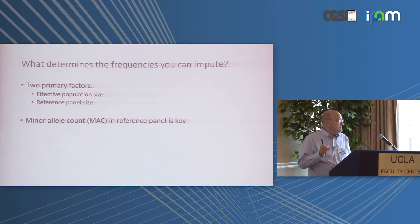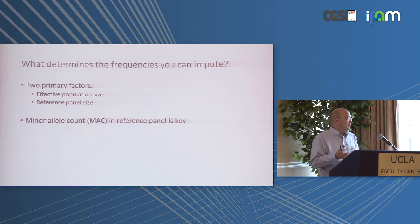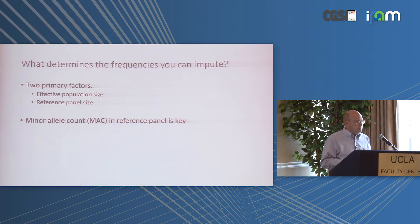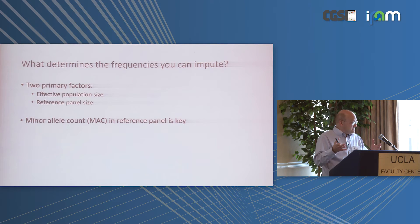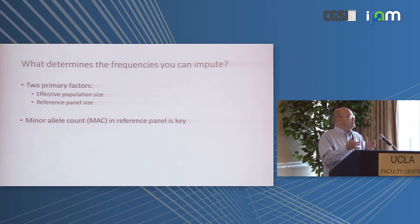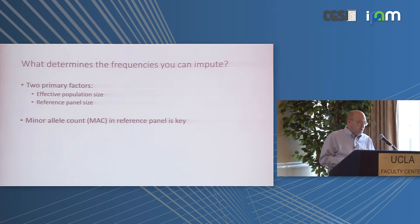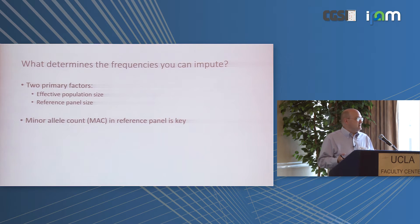The general rule is you can impute high-frequency markers well and low-frequency markers not very well. The two primary factors determining what you can impute are effective population size — which we can't change — and reference panel size, which we can change given money. More diverse populations have larger effective population sizes, shorter shared haplotype segments, and are harder to impute. A larger reference panel allows imputation of lower frequencies.